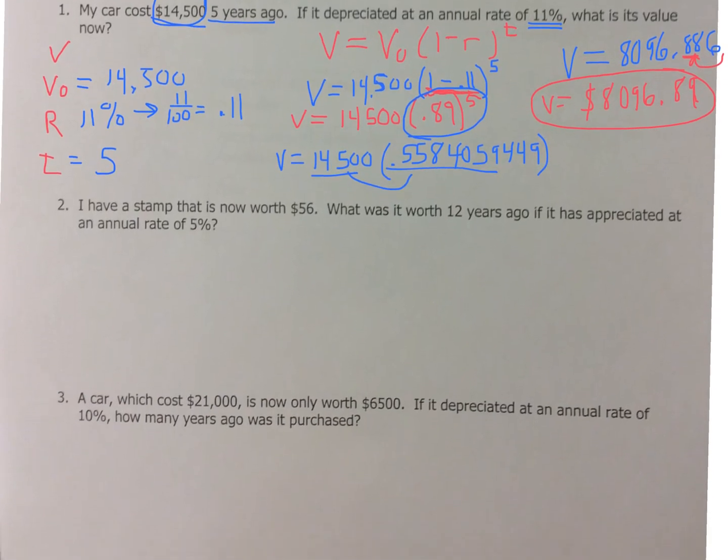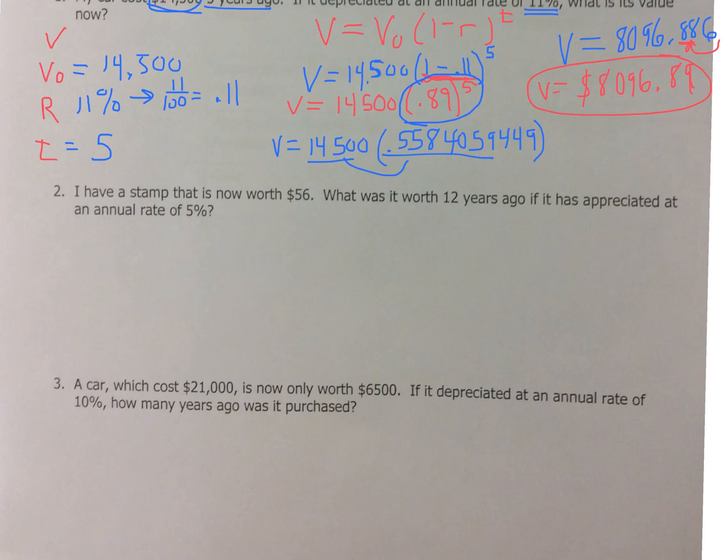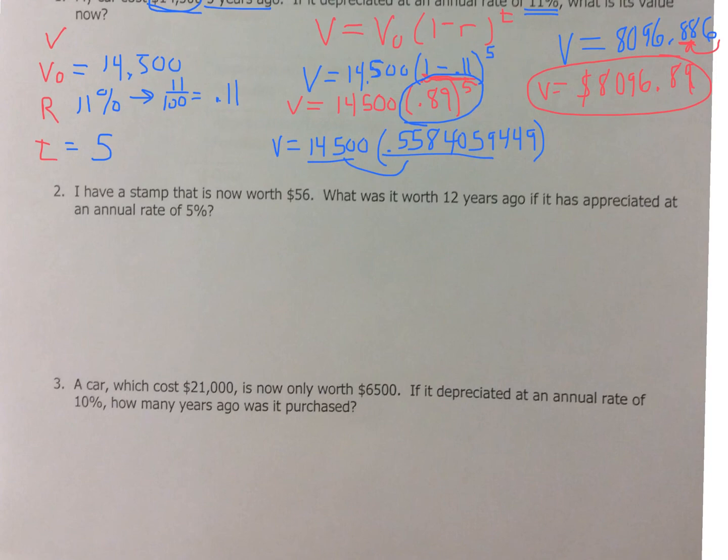Alright, so now let's look at number two. It says, I have a stamp collection that's worth $56. What was it worth 12 years ago if it appreciated a rate of 5%? So the first thing we've got to do is find out what we're missing here. V-O-R-T. So let's start. I have a stamp collection that's now worth $56. So now it's worth 56. Therefore, this is 56. What was it worth 12 years ago? So my time is 12. If it appreciated a rate of 5%, so 5%, now as a decimal, 5 divided by 100 is 0.05. So I'm looking for the V_O.